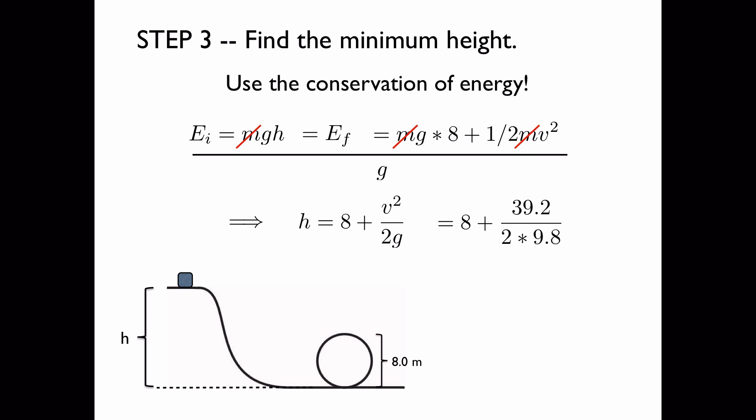Now we can plug in the v squared that we just found, 39.2, and we can plug in the value for g. We find that that expression now simplifies to 8 plus 2, or 10. 10 meters.